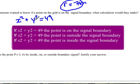If x squared plus y squared is greater than 49, then it is outside the signal boundary. And if x squared plus y squared is less than 49, then it is inside the boundary.